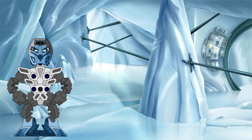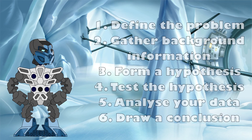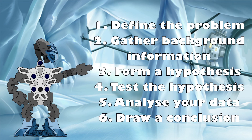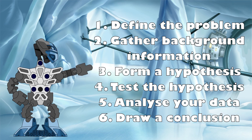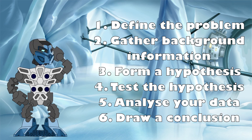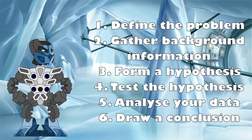The scientific method is a process by which scientists try to understand the world. It has six basic steps. Number one, define the problem — what question are you trying to answer? Two, gather background information — what is already known about it? Three, form a hypothesis: construct a theory about an answer to the question based on your research. A good hypothesis should allow you to make a prediction that can be tested with experiment.